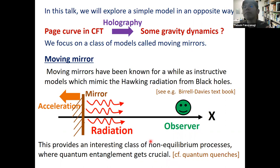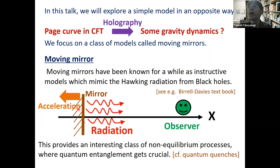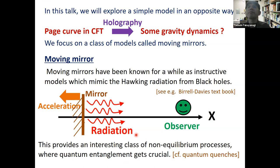The second reason to think about moving mirrors is their relation to non-equilibrium processes, which also has potential applications to ADS/CMT or applied holography. Many of you have heard about quantum quenches, which are a very basic time-dependent process where quantum entanglement plays a very important role. Moving mirrors give some new examples of such directions — they provide non-trivial non-equilibrium processes where the system is suddenly excited and non-trivial entanglement propagates. We may even be able to realize this in a laboratory using analog black holes.